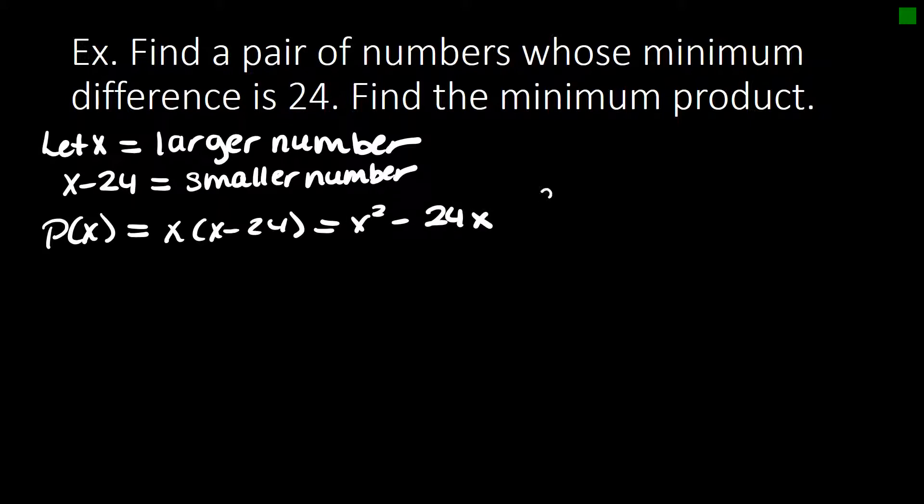So here a is 1, b is negative 24, and c is 0. So we can look at our vertex formula, negative b over 2a, and we'll get positive 12 back.